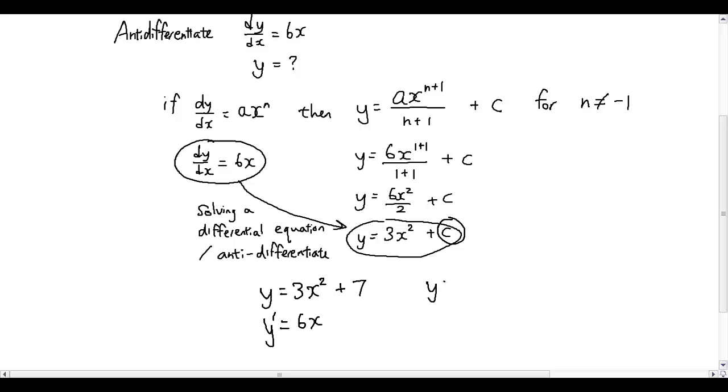So for example, if y is equal to 3x squared plus 15, y dash is still 6x. So that's why we put a symbol c there to represent that any constant at the back of the y equation will differentiate into this equation.